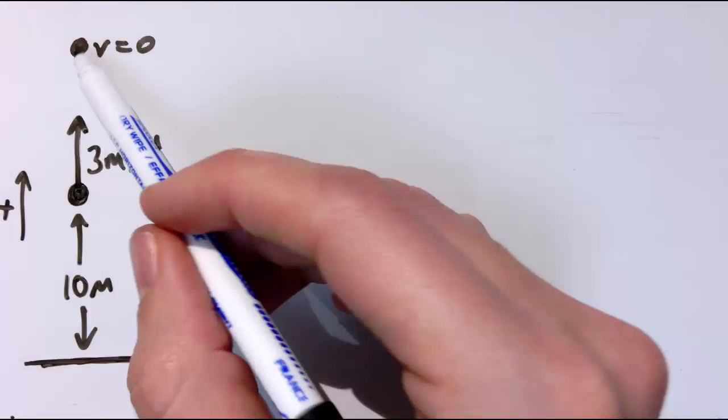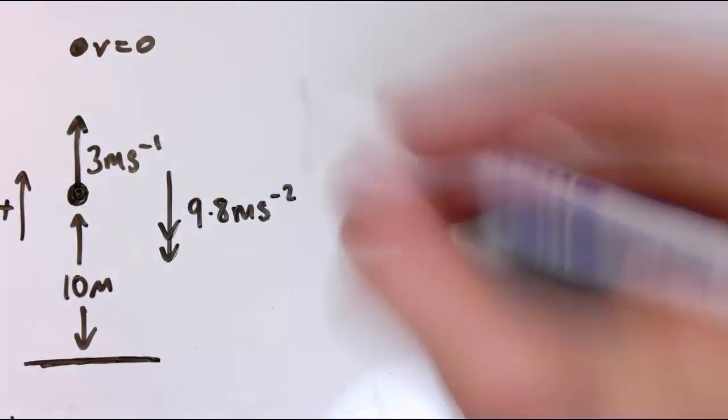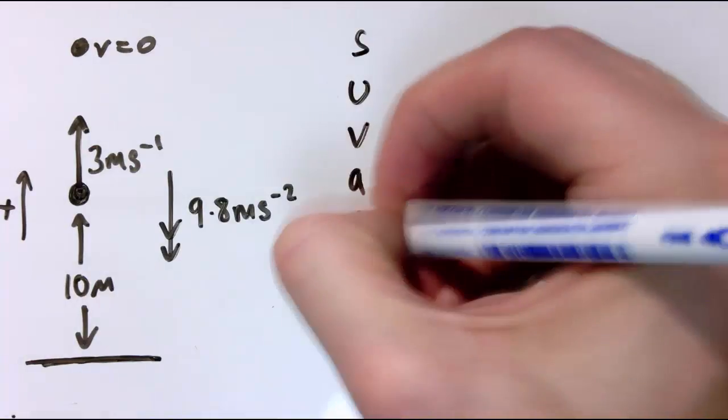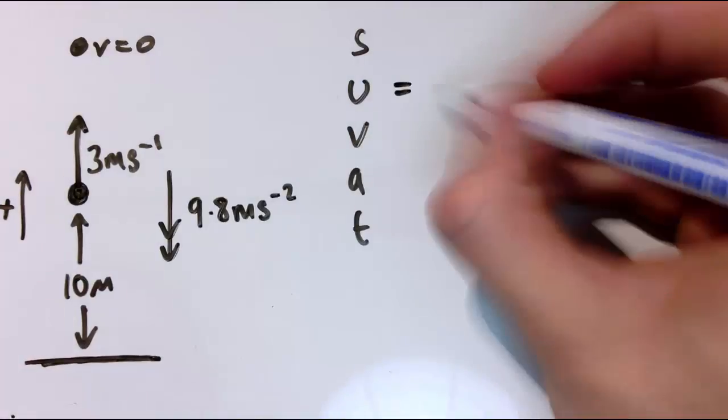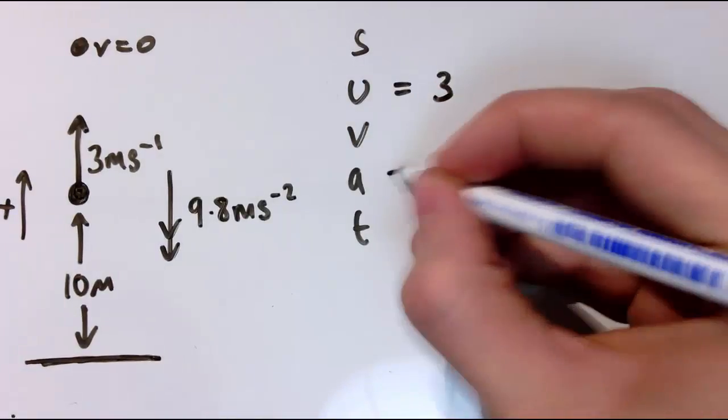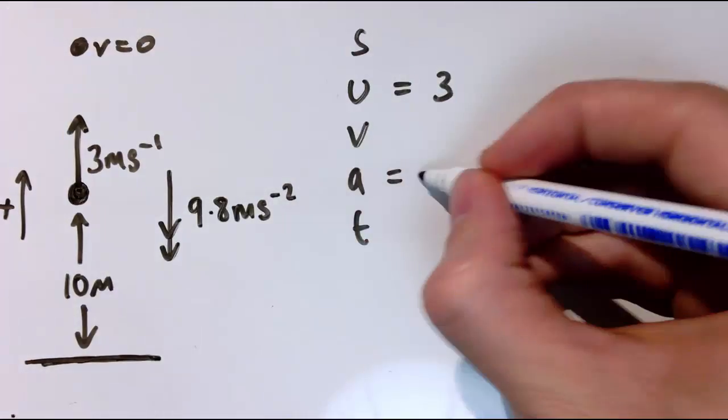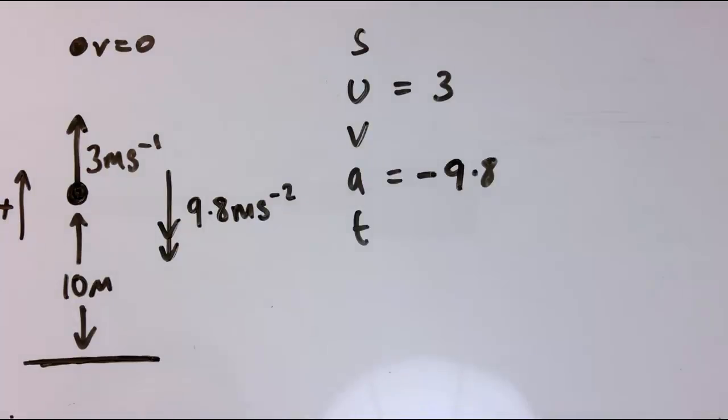Firstly, when does it get to the top here, and how far up does it go? Well, let's think about what we've got. So Y equals 0 here, and I've got U, which is the initial velocity, which is three meters per second. A, now it's 9.8 meters per second squared downwards, so I need to write that as minus 9.8, it's in the downwards direction.